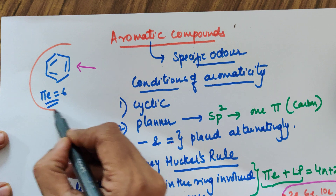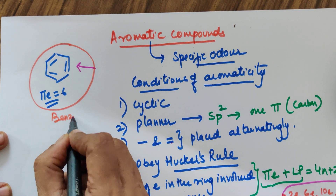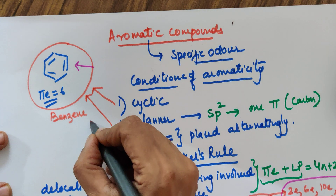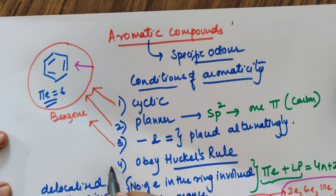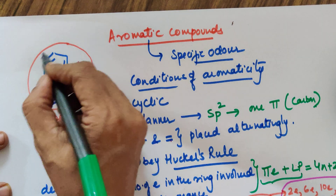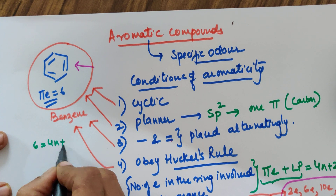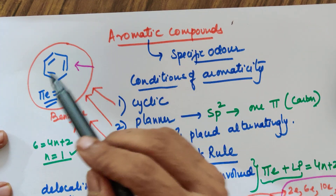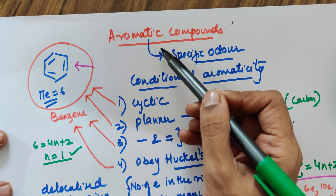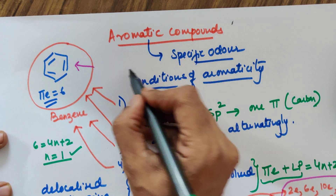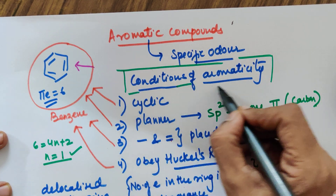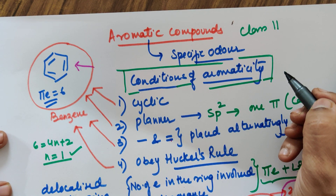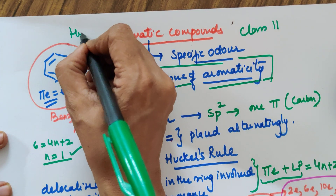To conclude: the best example of an aromatic compound in your course is benzene. It is cyclic, all carbons have at least one pi bond, single and double bonds alternate, and it obeys Hückel's rule since the pi electrons are 6: 6 = 4n + 2 gives n = 1. All compounds containing benzene also have a specific odor and are aromatic by Hückel's rule. This ends our discussion of the conditions for aromaticity, required for Class 11 in General Principles of Organic Chemistry and the Hydrocarbons chapter.